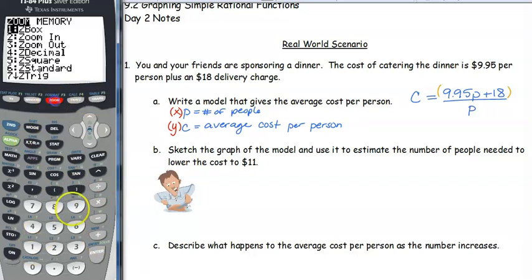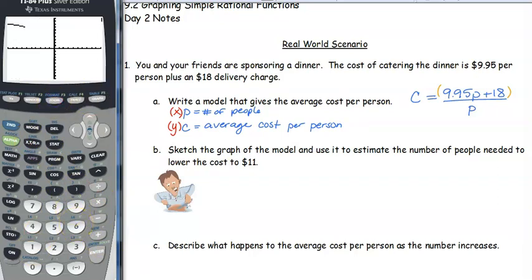We always start off with a standard window, zoom 6. And we see this graph right here. We know that we have a hyperbola, so we know that we need to have two sections of it. So I need to find that other section.